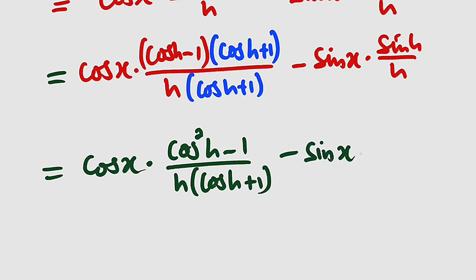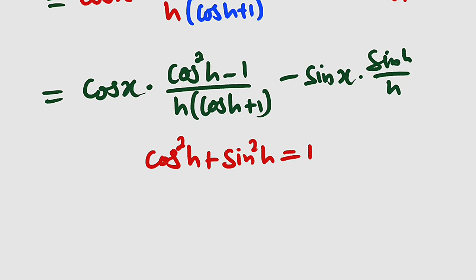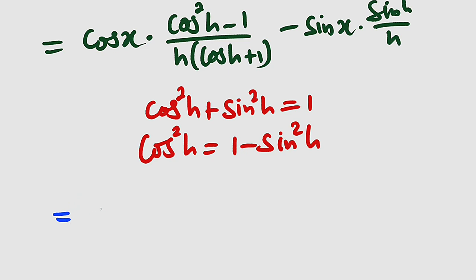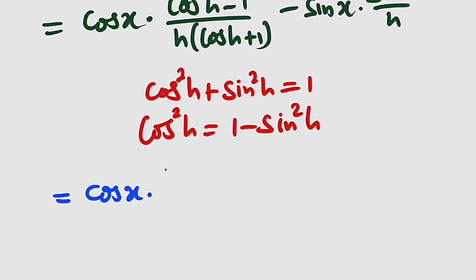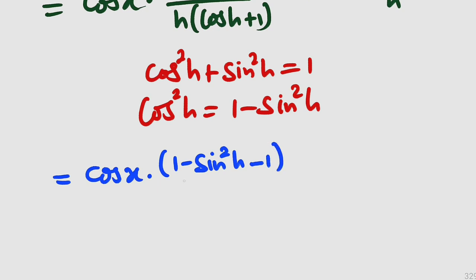You should know that cosine squared h plus sine squared h equals 1. This is an identity. So if we make cosine squared h the subject, we get cosine squared h equals 1 minus sine squared h. So I'm going to replace cosine squared h with 1 minus sine squared h in the numerator. Our expression becomes cosine x multiplied by (1 minus sine squared h minus 1), don't forget we have minus 1 here, divided by h times (cosine h plus 1), then minus sine x times sine h divided by h.